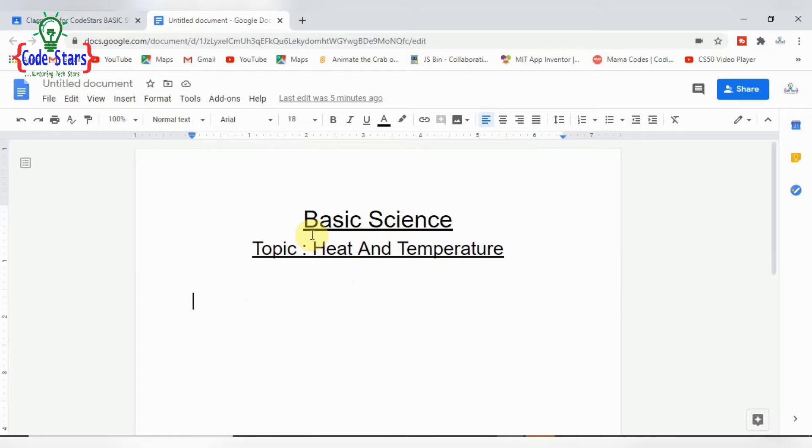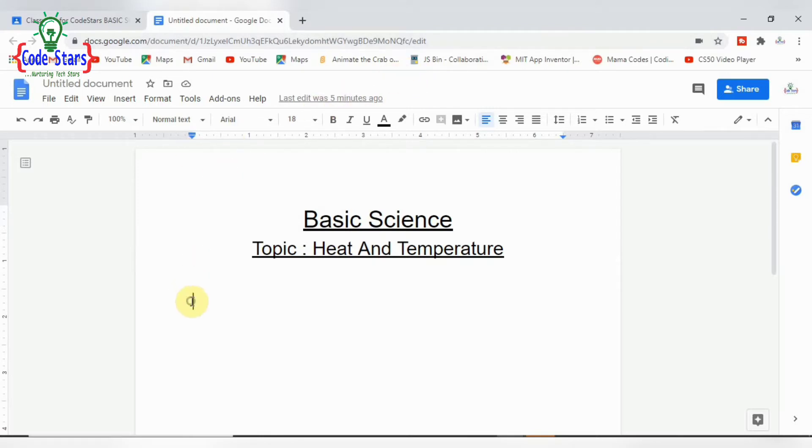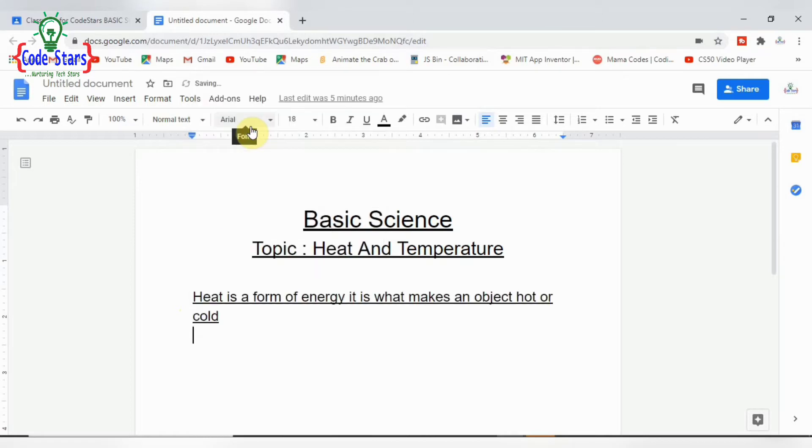Definitely typing it may not be the best. Then there are two ways to go about it. One way is that you can actually copy the contents from any other source on your PC, either from Word document or anywhere. Just highlight it, copy it, and click on it to paste it. That's one way that can be done.